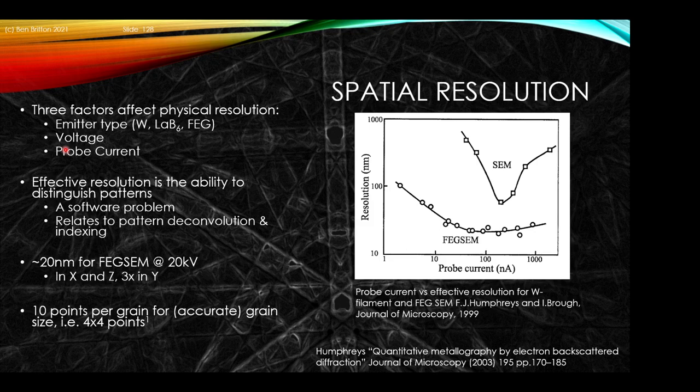Importantly, the physical resolution is where the scattering occurs, but the effective resolution is how well you can classify, index, and distinguish two diffraction patterns — that's a software problem relating to the pattern matching and deconvolution indexing routines. You can get this down to about 20 nanometers in a FEG SEM at 20 kV in X and Z, but remember it's three times elongated in Y down the tilt axis. If you want to measure grain size, think about this — you'll typically require 10 points within the grain for a relative estimation of grain size.